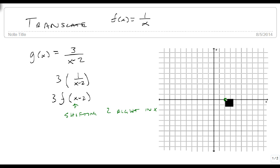We're shifting to the right 2. So this is my new 0, 0. And normally we get a graph that looks like this.